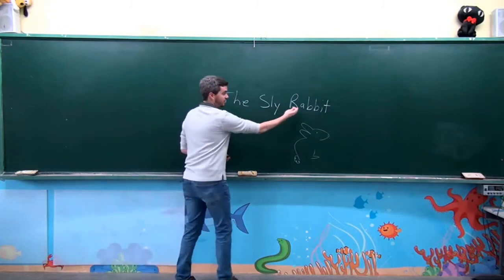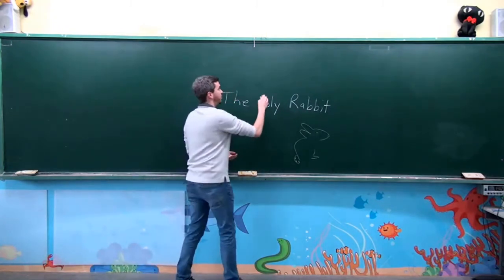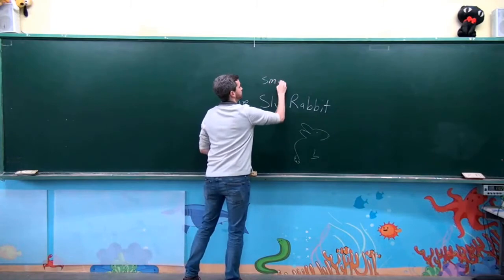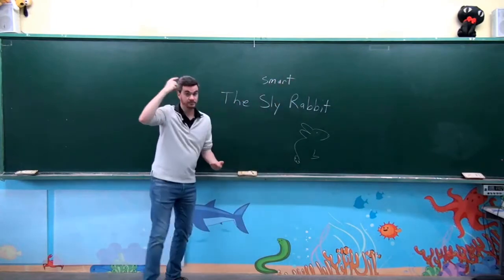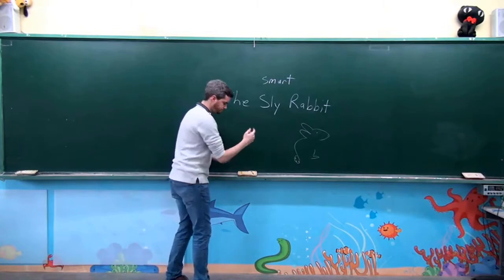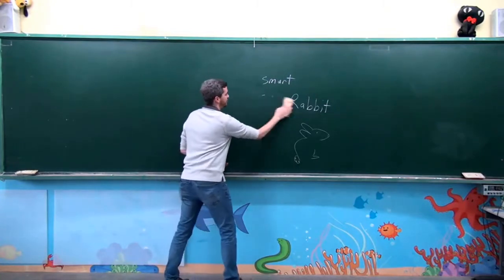Sly means that the rabbit is very smart. Very smart. A little tricky, but very smart. Sly rabbit. I hope you like the story.